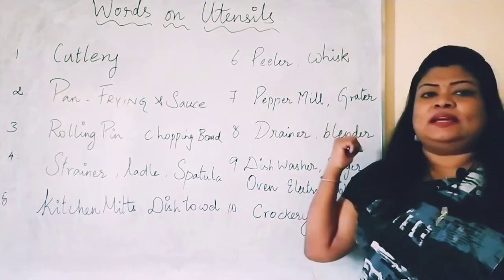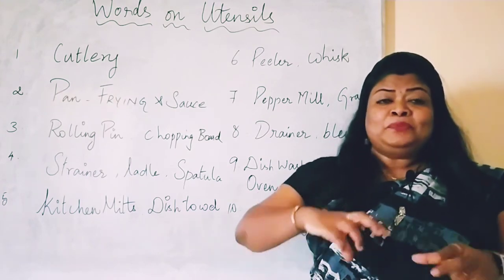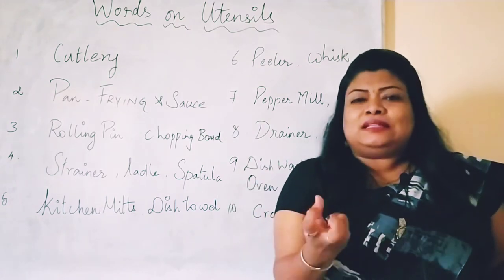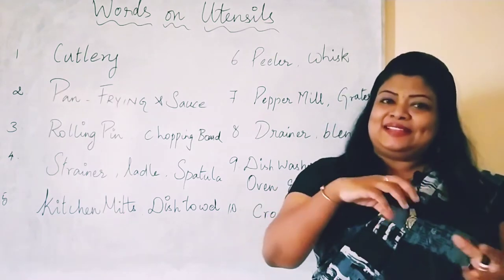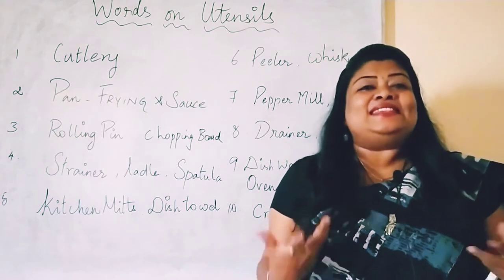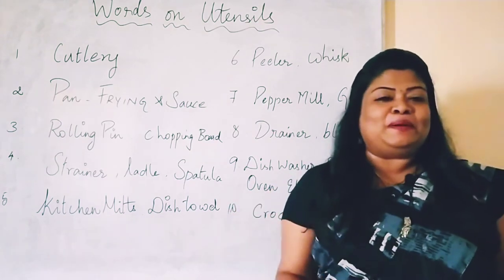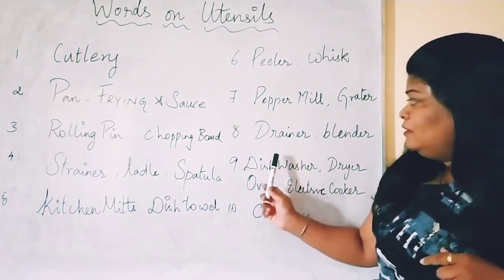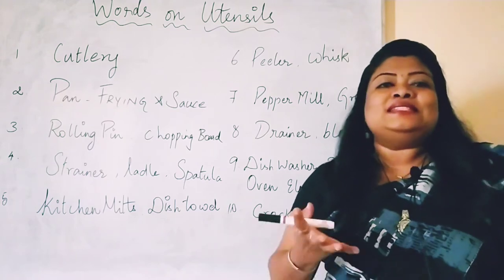Next is the pepper mill and the grater. I already told you about the grater. Pepper mill is a nice word. If you use a wooden instrument, you can fill it with peppercorns. Whenever you are rolling it, it crushes the pepper and gives you fresh crushed pepper. The name of that instrument is pepper mill. Also, in another video I have told you about the sieve — S-I-E-V-E. The sieve is one important instrument we use in day-to-day cooking.